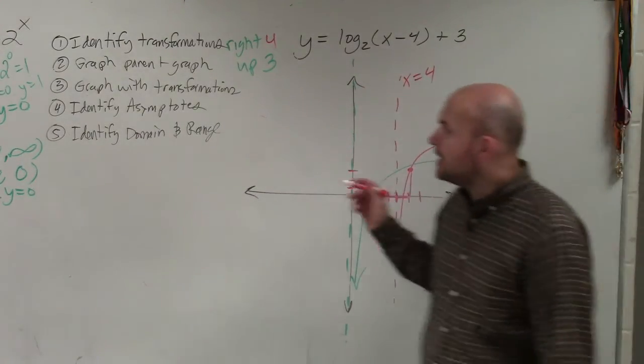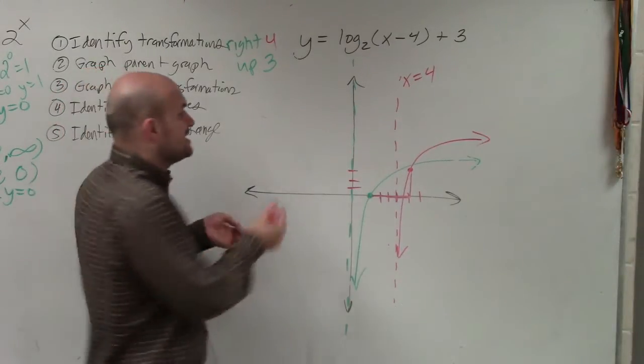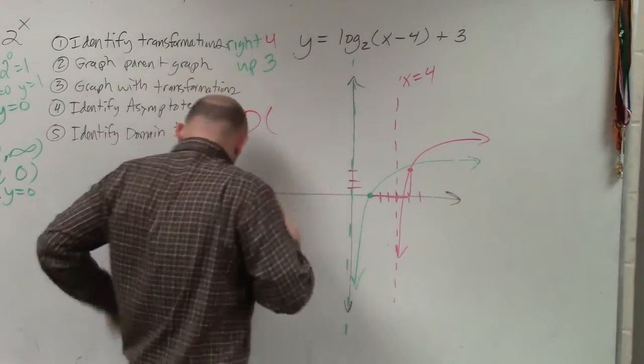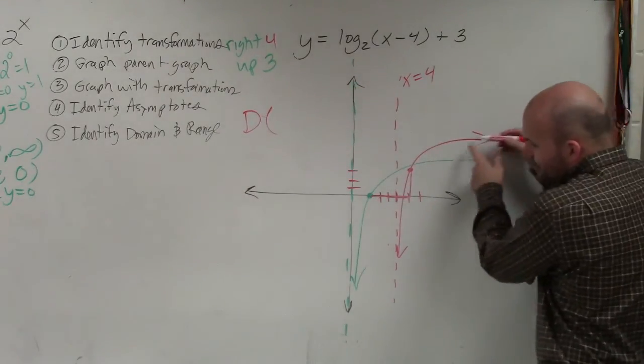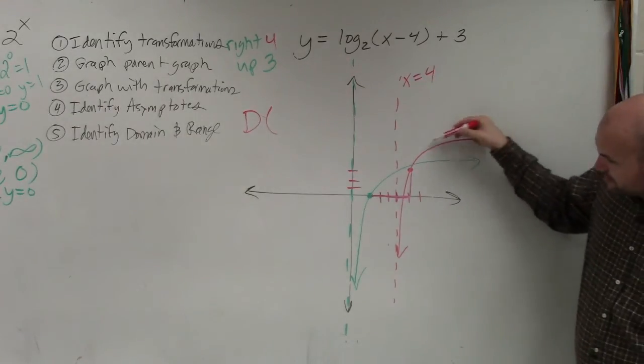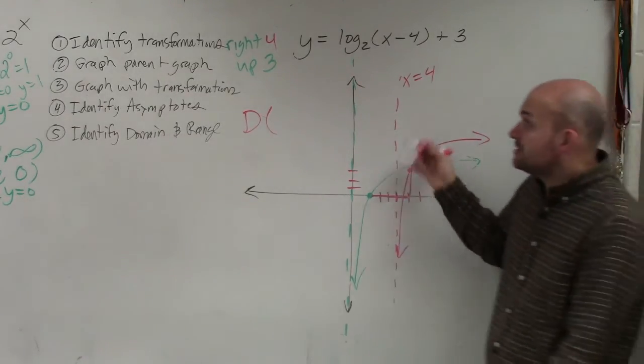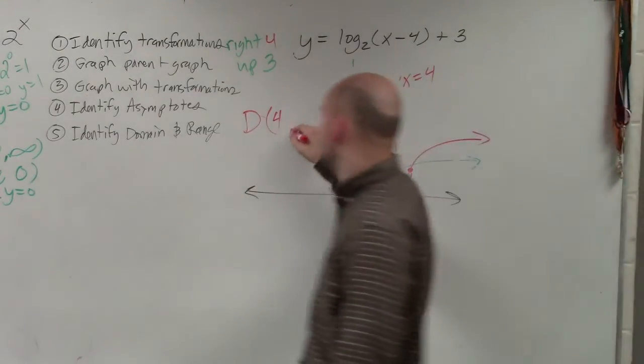And then the last thing is, now we need to identify the domain and range. Remember, domain is the set of all x values. So how far to the left is this graph going to go? Well, be careful. The red graph. It only goes as far as 4. How far to the right does it go? Forever. Forever, 4 to positive infinity.